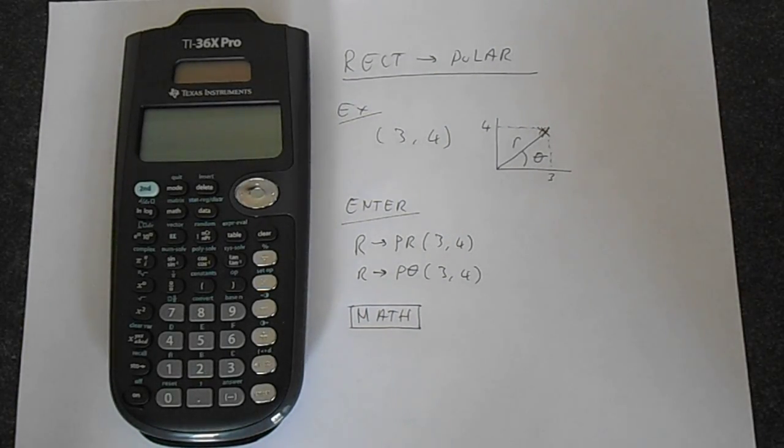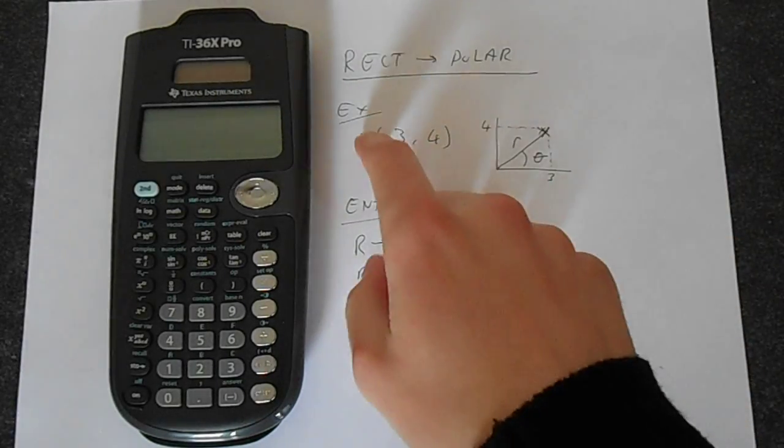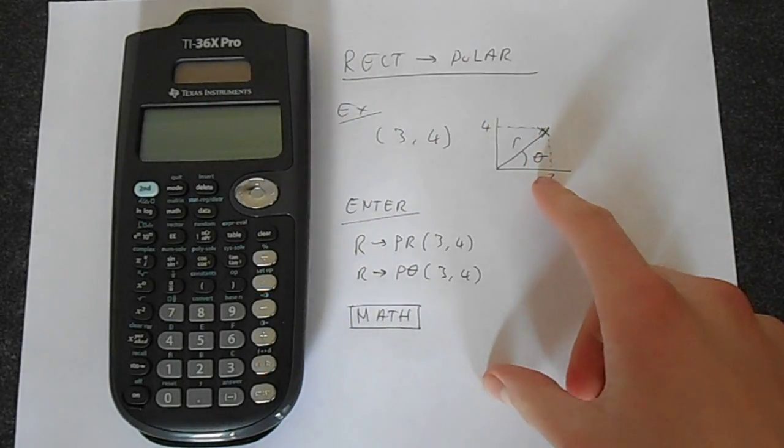In this video I'm going to show you how to convert between rectangular and polar form in the TI-30X Pro calculator. So to do this we'll just jump straight into an example.